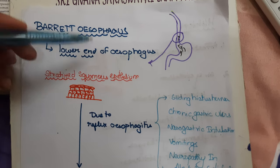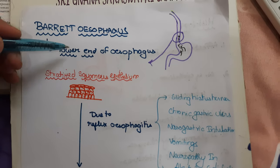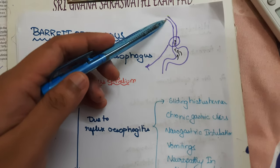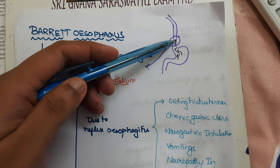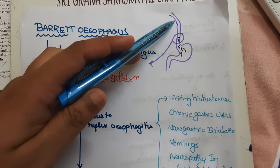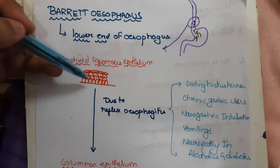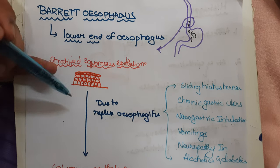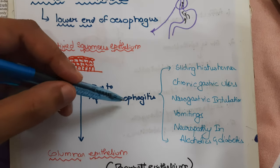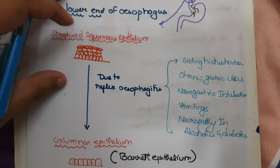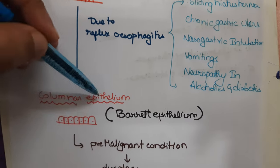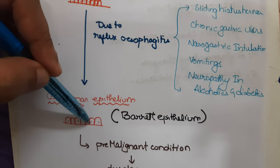Today let's learn about Barrett's esophagus. This condition is seen generally at the lower end of the esophagus. The esophagus normally has stratified squamous epithelium, but due to a condition called reflux esophagitis, there is conversion of stratified squamous epithelium into columnar epithelium.